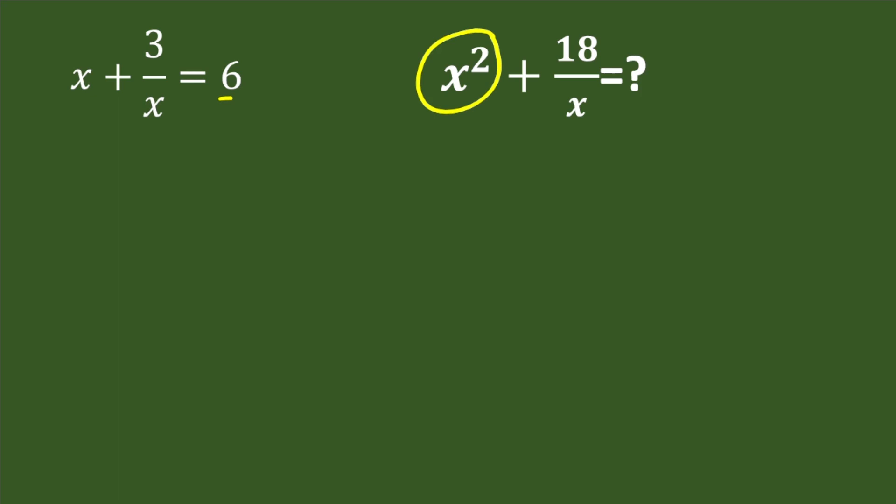Now let's make this expression in the x squared form. Let's first solve it and simplify it. We can take x as LCM, so here it will be x squared plus 3, and that will be equal to 6.